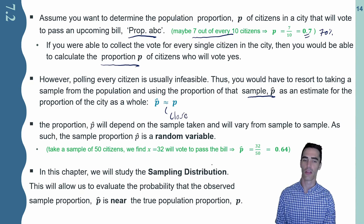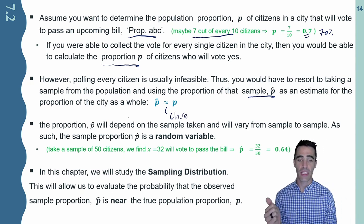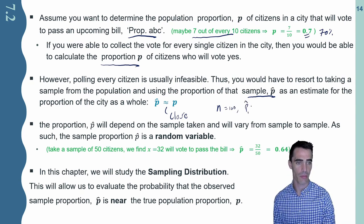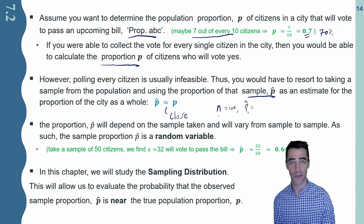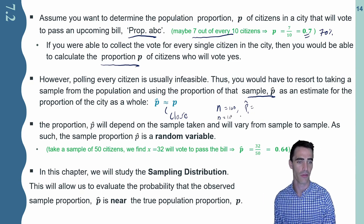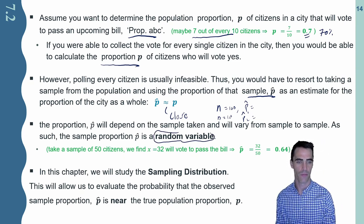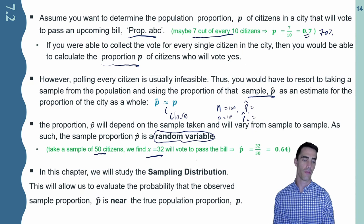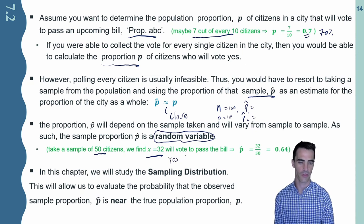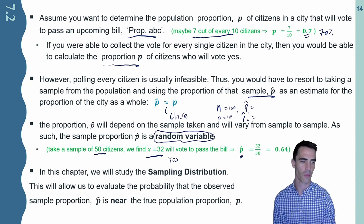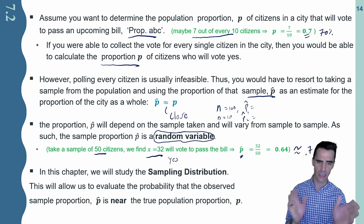Oftentimes our best guess is from a sample, and ideally these two should be pretty close. But every time we take a different sample — say maybe I talk to n equals 100 individuals — I'm going to get a particular sample proportion from those individuals. If I take another different sample and talk to a different hundred people, I'll get a different sample proportion. This sample proportion is a random variable. For example, say I take 50 citizens and find that 32 of them vote to pass the bill. My sample proportion is 32 divided by 50, which is 0.64 — pretty close to my 0.7 population proportion.